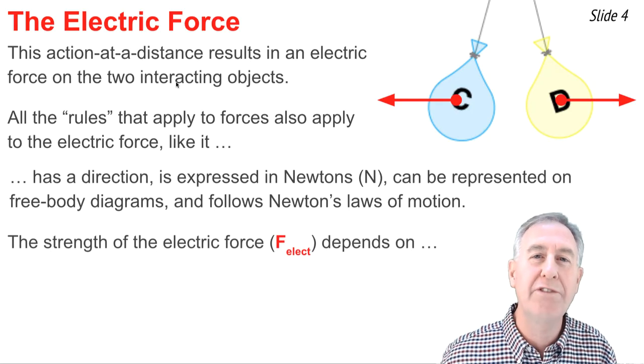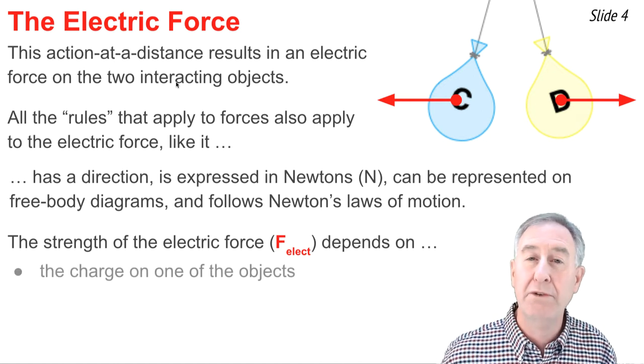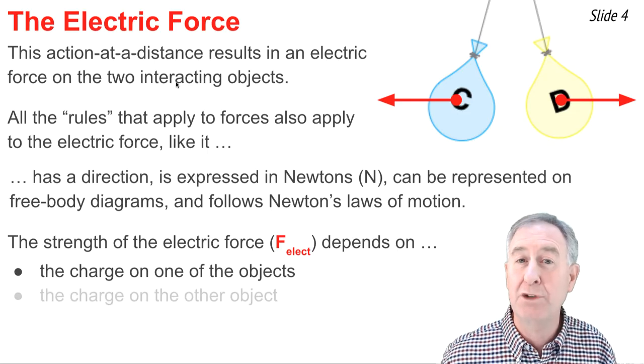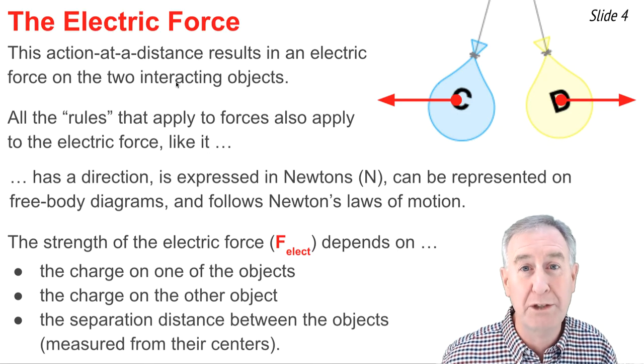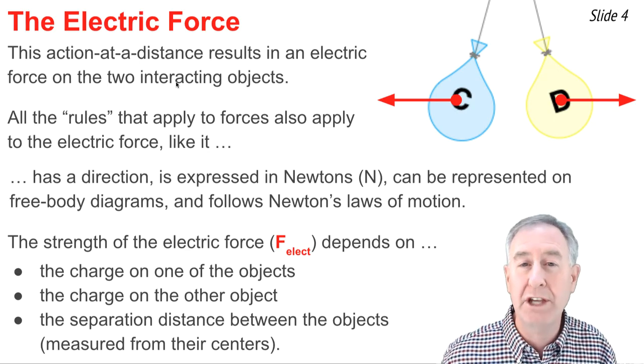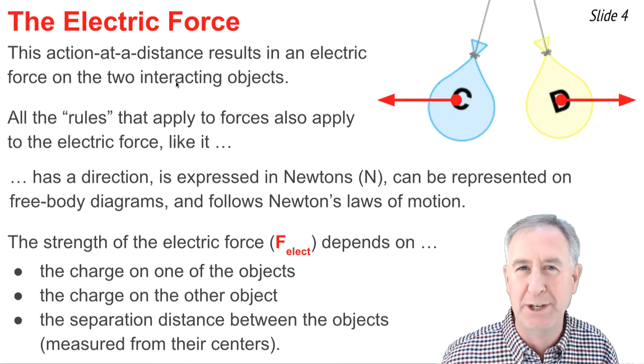The magnitude of the electric force is dependent upon three variables: the amount of charge on one of the object, the amount of charge on the other object, and the separation distance between the two objects. We measure the separation distance not from their nearest edges, but from the centers of the two objects.